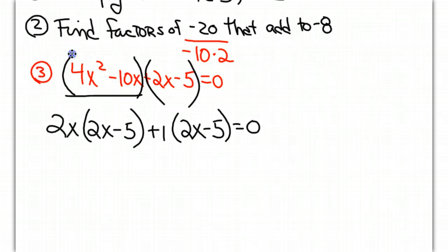Now we've created two new terms: 2x times 2x minus 5 and 1 times 2x minus 5. They have the factor of 2x minus 5 in common. If we factor that out we're left with 2x from the first term and a positive 1 from the second term. Now we have completely factored that quadratic equation.